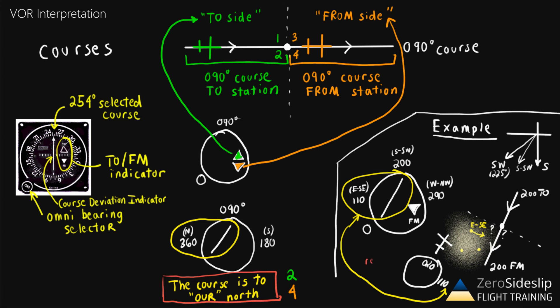This scenario is called reverse sensing, and generally we try to avoid it by selecting a course that's in the same general direction that the airplane is heading. But sometimes it's unavoidable. So that's why it's really important to interpret the VOR indicator the way we covered in this video. Don't think left-right, but instead think of what direction is the needle telling me that the course is relative from the airplane.